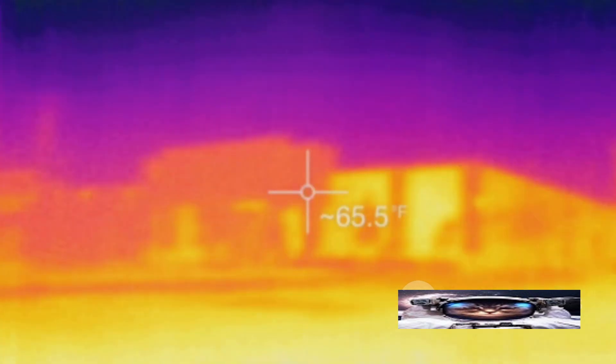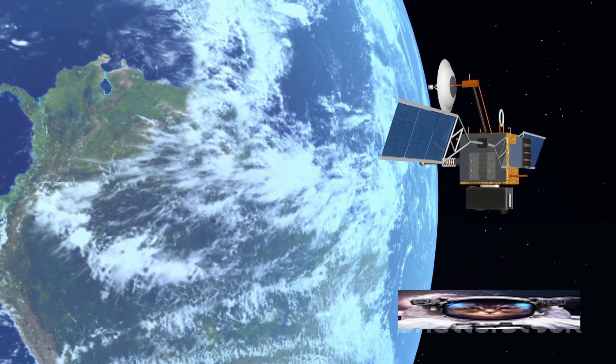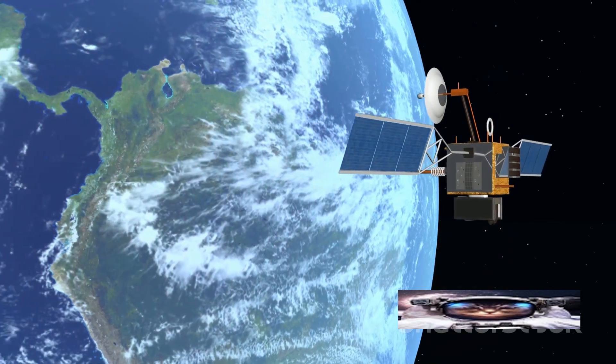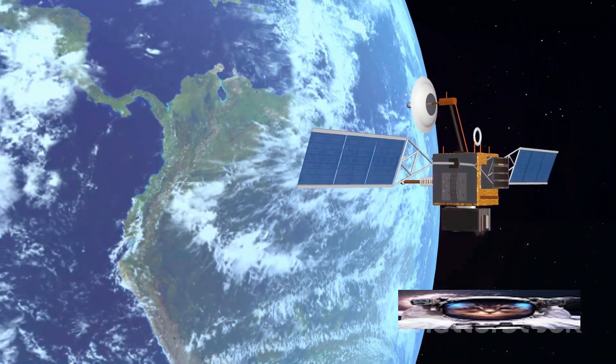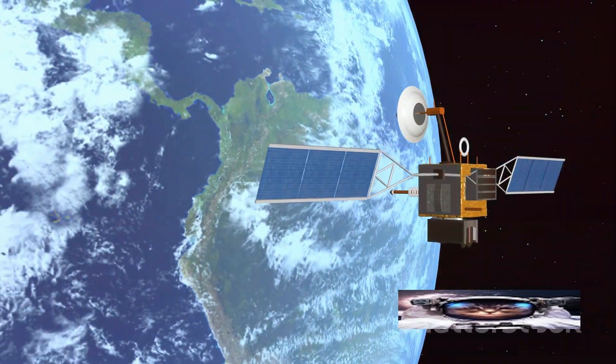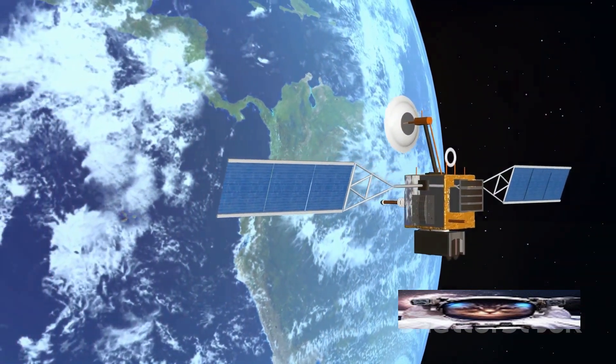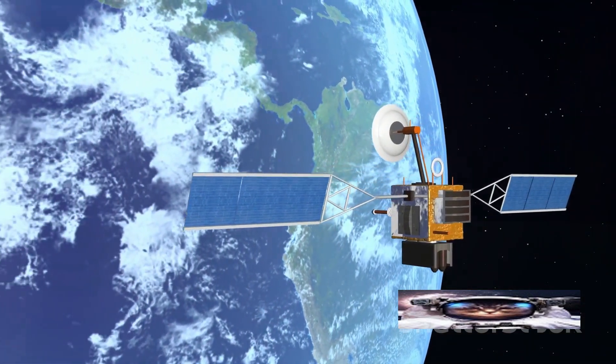Radiometers, on the other hand, are the workhorses of climate monitoring. They measure the intensity of electromagnetic radiation, including light. This allows them to monitor everything from cloud cover to atmospheric gases, helping us understand weather patterns and the impact of greenhouse gases.